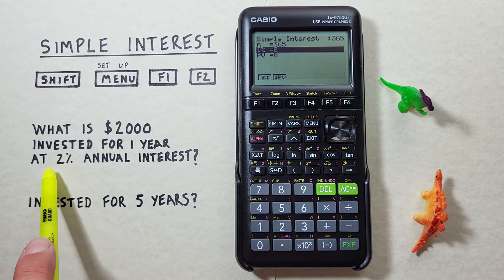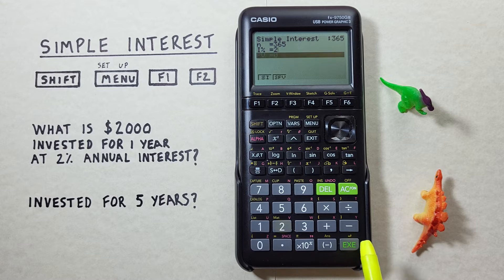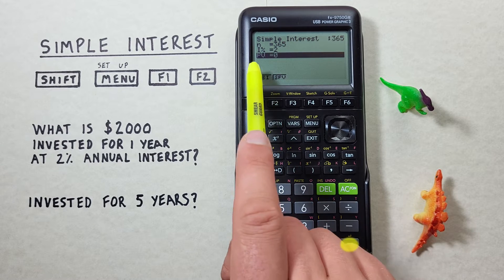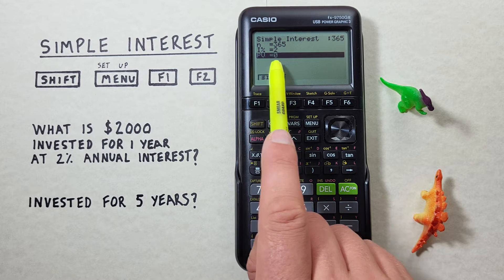Well we're doing 2% interest so we'll hit 2, EXE and then PV or present value. That's the amount that we're putting in initially.